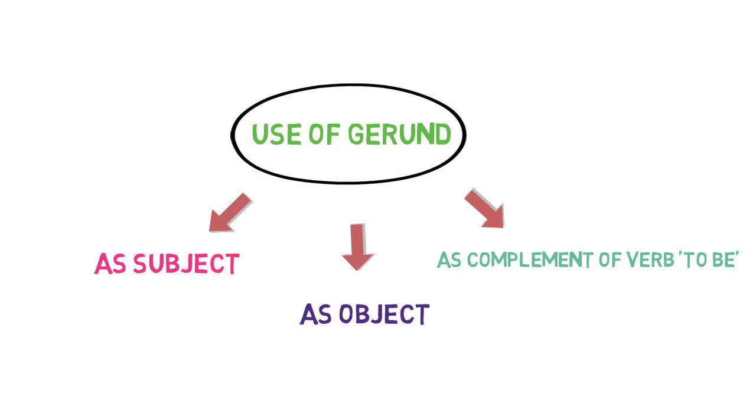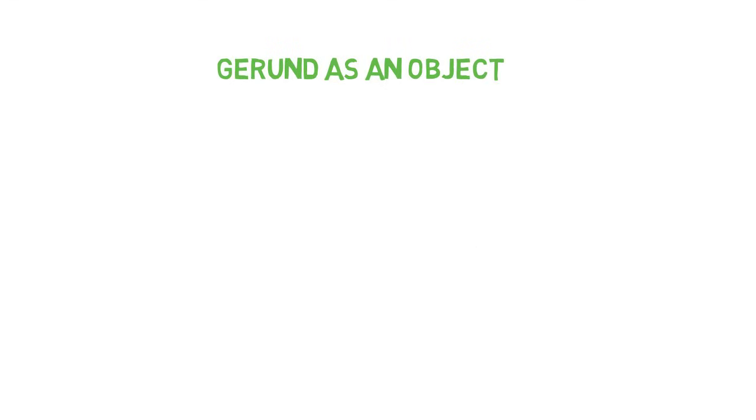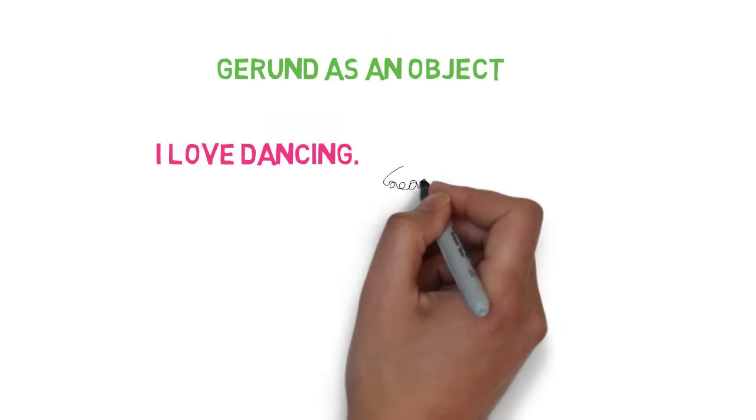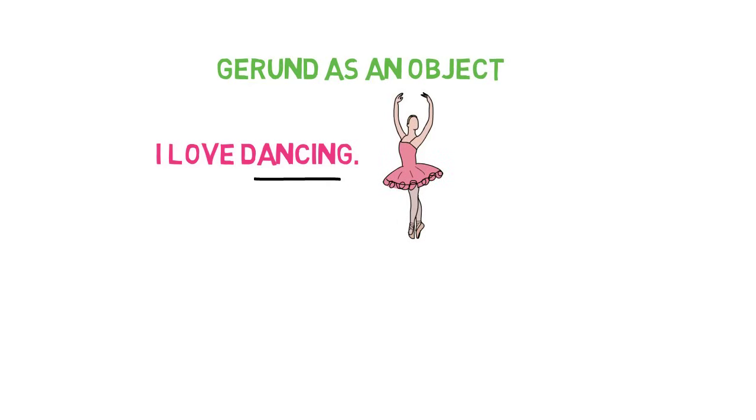Let's look into example where we use gerund as an object. I love dancing. Here, dancing is a gerund which acts as an object in the sentence.